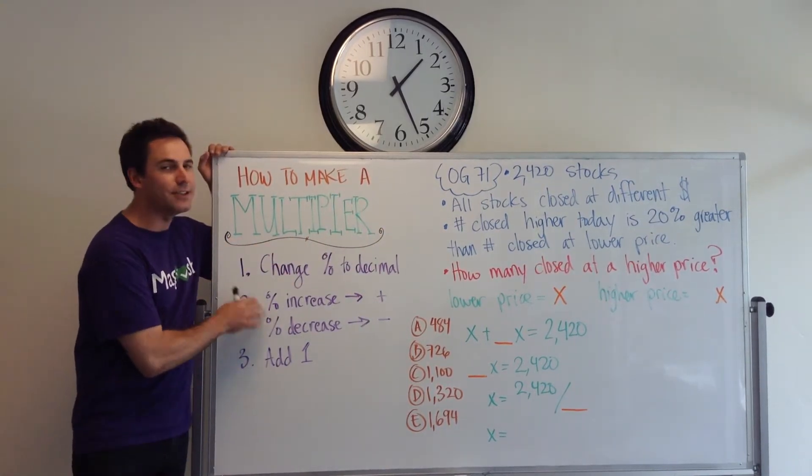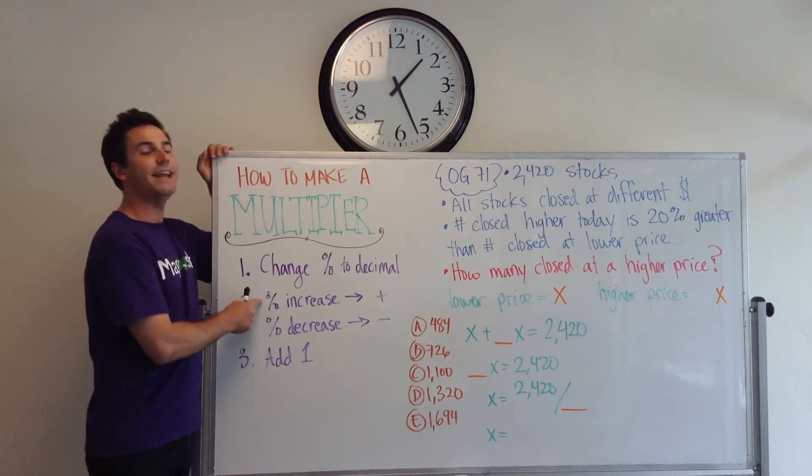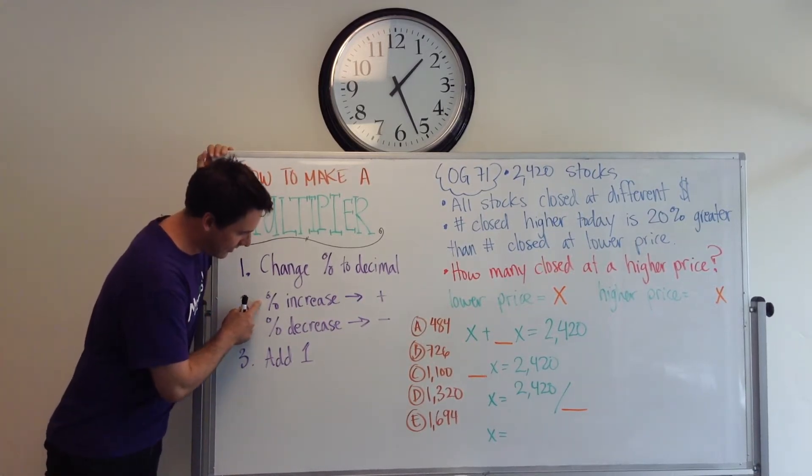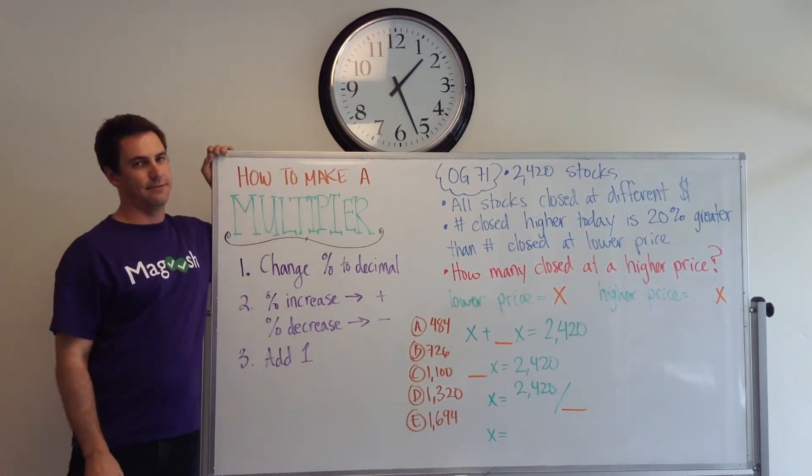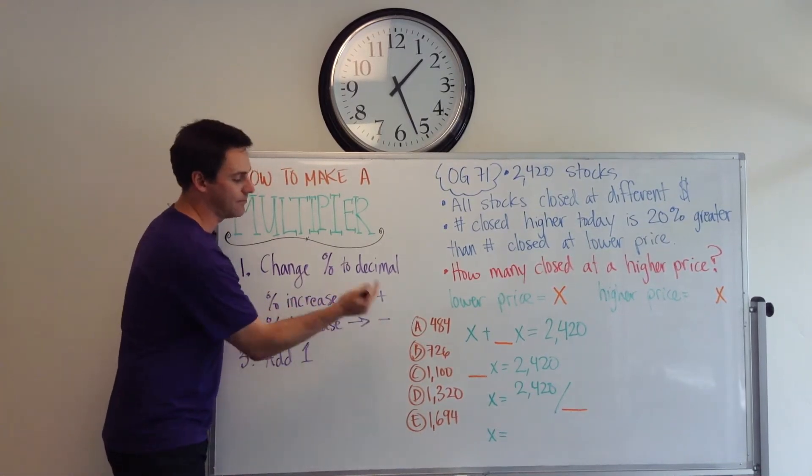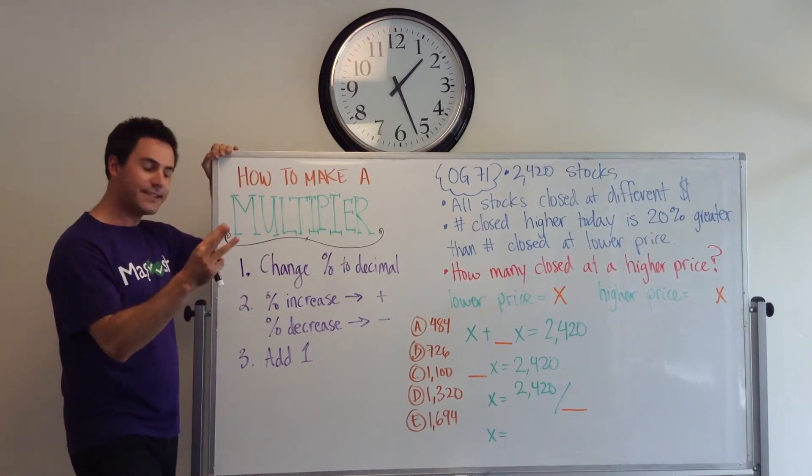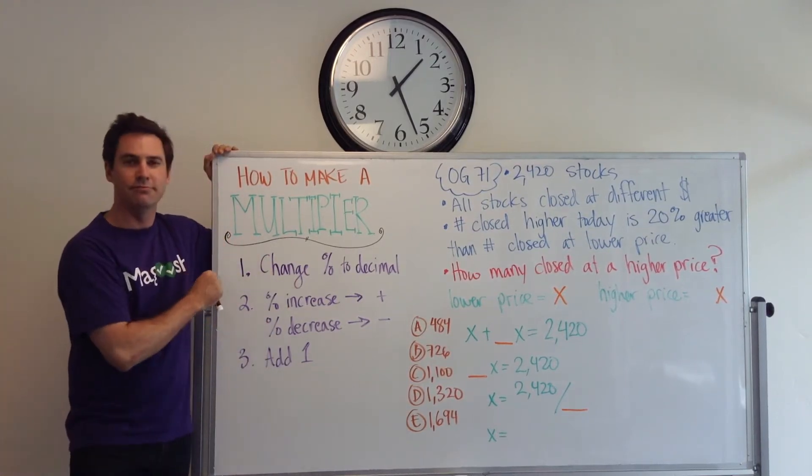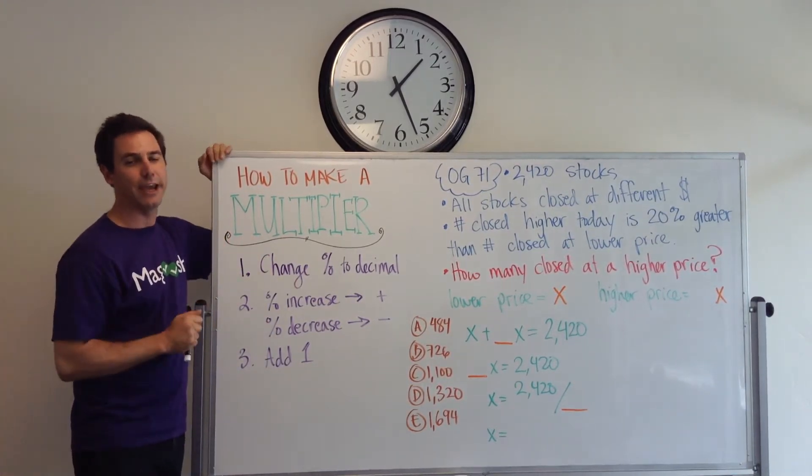Next, you have two options in step two. If it's percent increase, then you're going to make your decimal positive. If it's a percent decrease, then you're going to make your decimal negative. Third step, add one. That's it. That's all you have to do to make a multiplier.